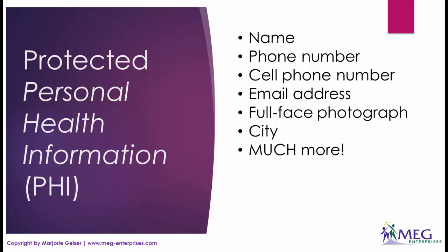Name, phone number, cell phone number, email address, full face photograph, and city. To see a list of all 18 PHI identifiers, you can go to the URL listed at the bottom of this page.